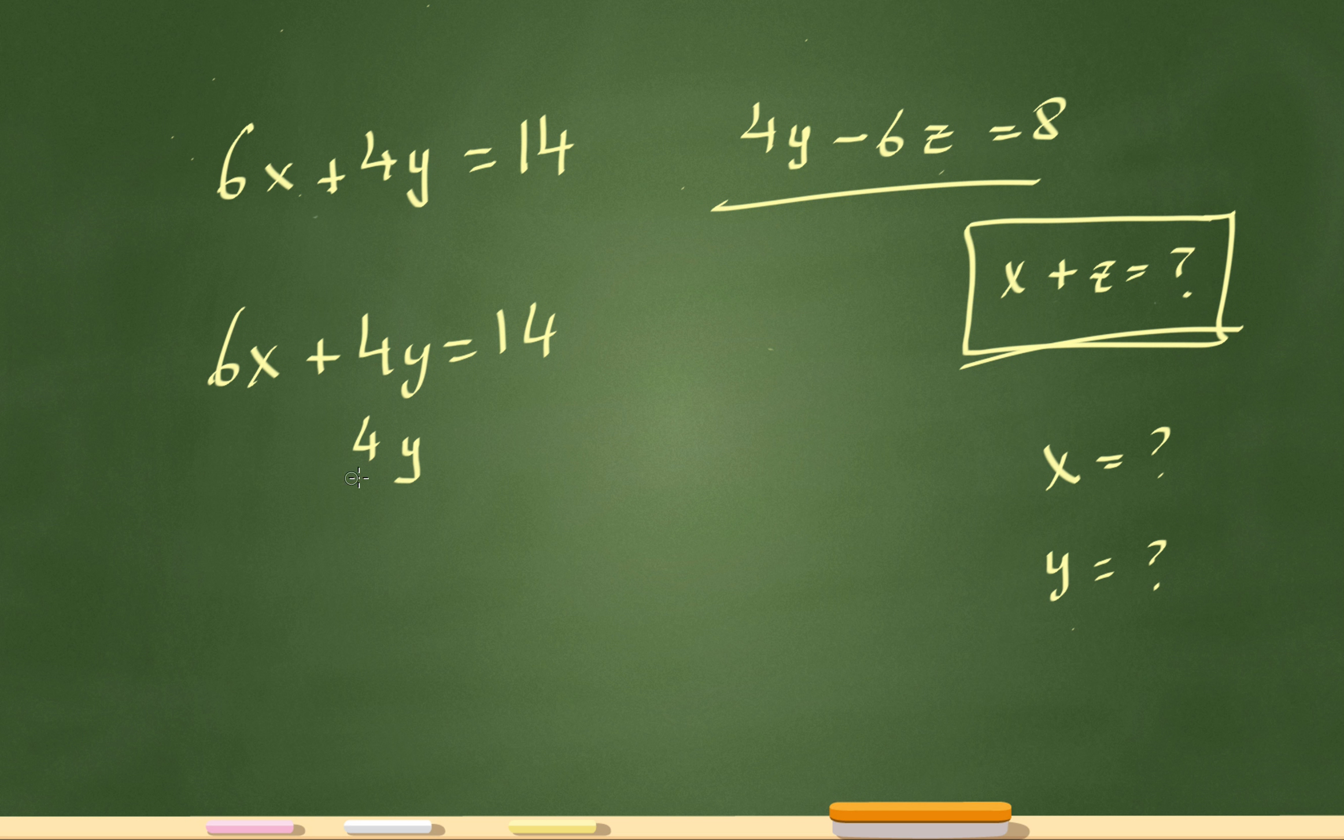Well the negative 6z doesn't match up with the x or the y, right? So I'm just going to put my negative 6z right there and I'm going to set that equal to 8. And what I can do now is just add the two equations straight down. So what's 6x?